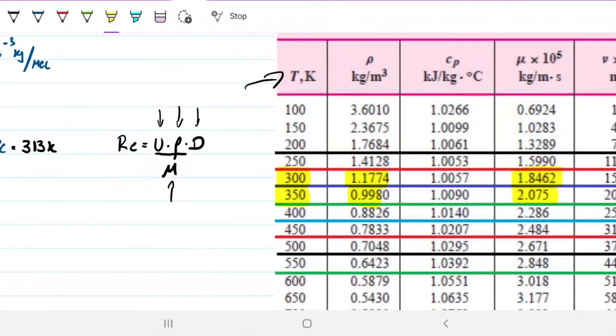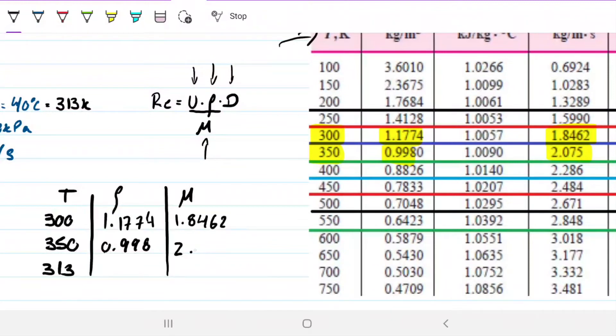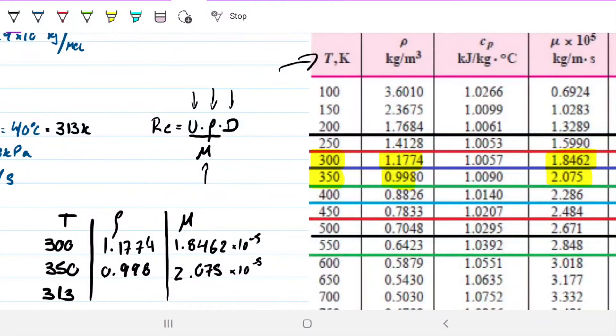What's the bulk temperature that we have in this case? So we have 40 Celsius, which is equivalent to 313 Kelvin. So that's what we're aiming for. We have values for 300 and 250, so I want to grab my density between these two values. I want to grab my dynamic viscosity between these two values. So let me just quickly do something like this. My temperature is 300, 350, and 313, which is what I'm looking for.